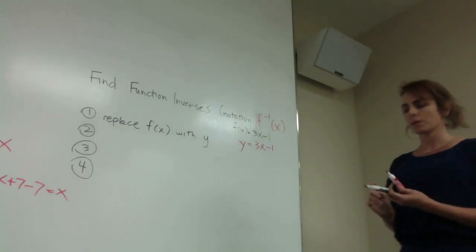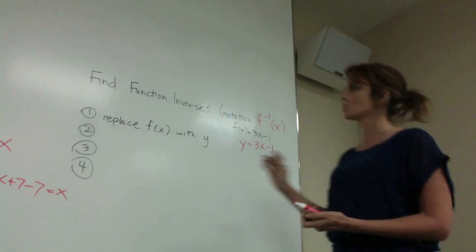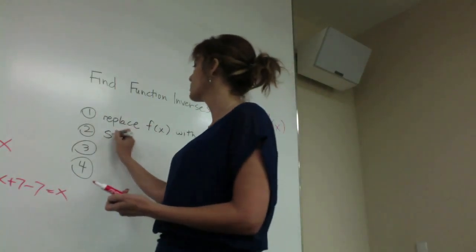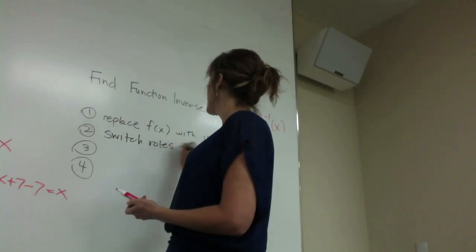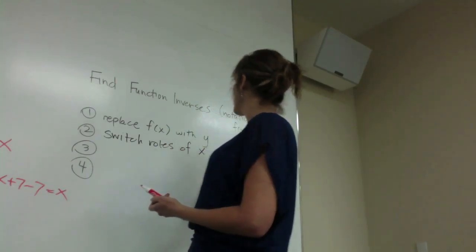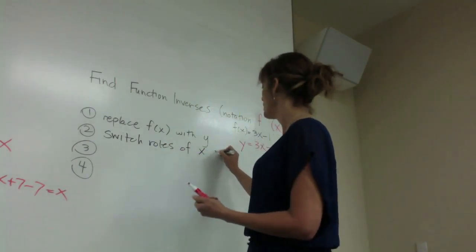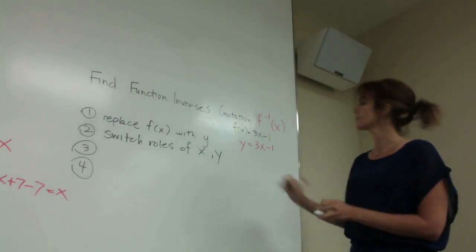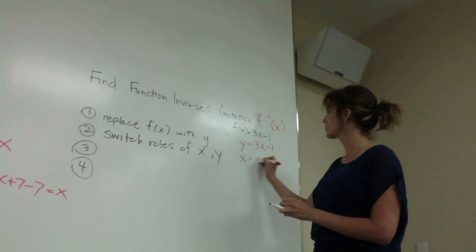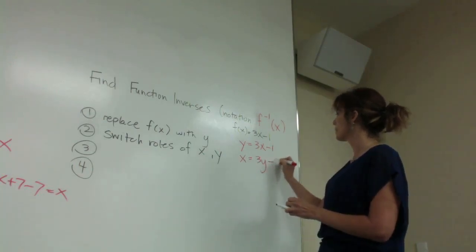The next thing we're going to do is switch the values or switch the roles of x and y. So anytime you see x, you're going to make it y, and anytime you see y, you're going to make it x. So this becomes x = 3y - 1.